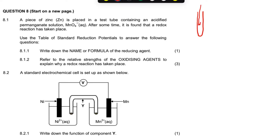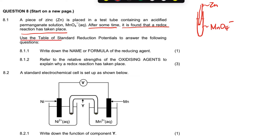So the zinc is here in this solution of permanganate — MnO₄⁻ — which is acidified. After some time, a redox reaction takes place, meaning there's a transfer of electrons from the zinc to the permanganate. It says to use the table of standard reduction potentials to answer the following questions.